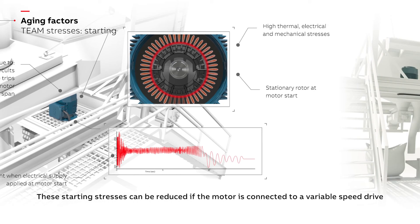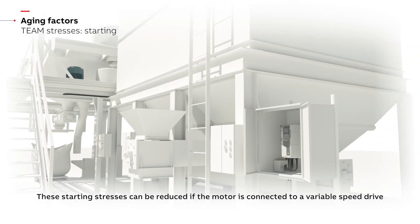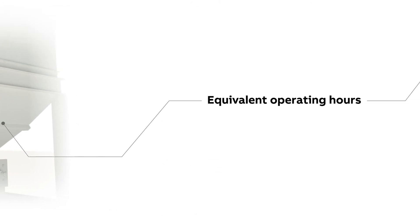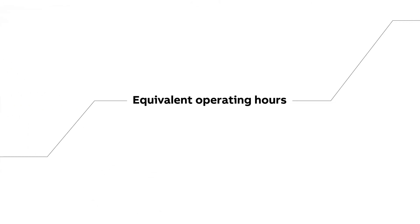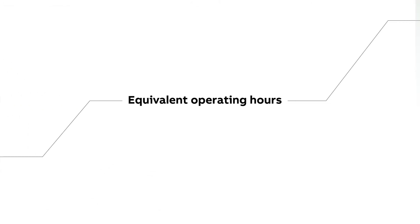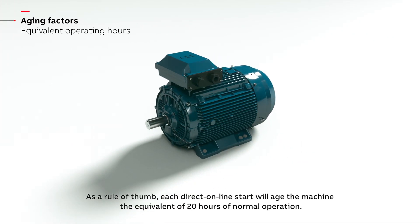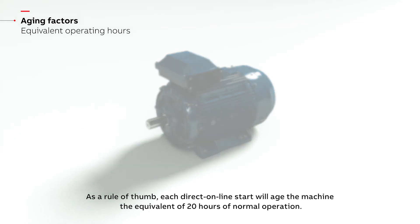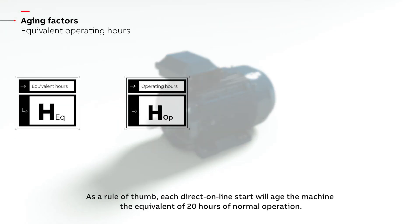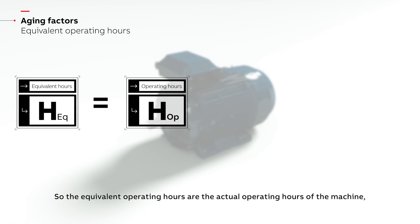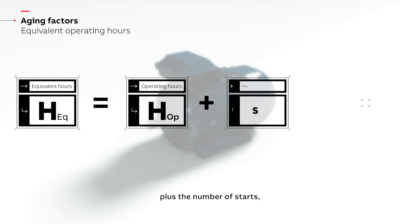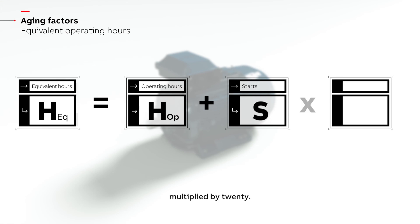These starting stresses can be reduced if the motor is connected to a variable speed drive. As a rule of thumb, each direct online start will age the machine the equivalent of 20 hours of normal operation. So the equivalent operating hours are the actual operating hours of the machine, plus the number of starts multiplied by 20.